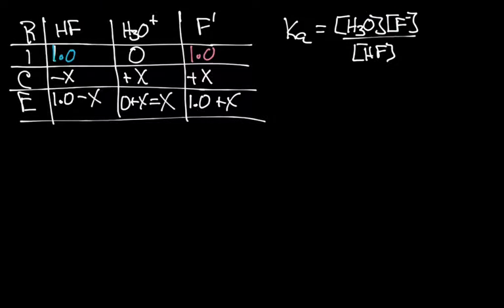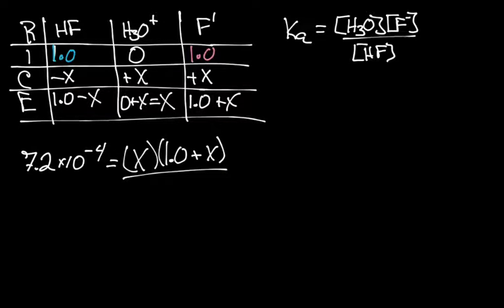Which is 1.0 + x divided by 1.0 - x. We're going to assume that this x here, this change is so small that it'll round out adding or subtracting from one. So we're going to ignore those, although we do need to go back and double check it.